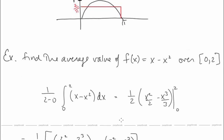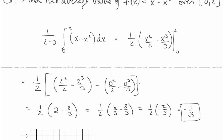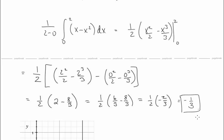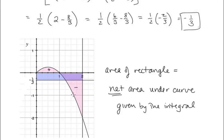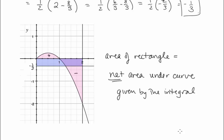Find the average value of f(x) = x − x² on [0, 2]. We compute (1/(2−0)) ∫₀² (x − x²) dx, take antiderivatives, plug in bounds, and subtract to get −1/3. This is a bit different because f takes both positive and negative values over [0, 2]. The area of the rectangle from the average function value equals the net area under the curve — counting the region above the x-axis positively and below negatively. This concludes our lesson on the Second Fundamental Theorem of Calculus.